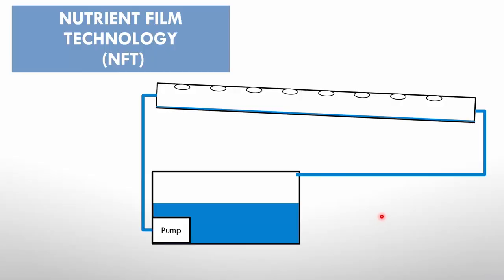So we will discuss the different systems first and then we'll do a combined calculation. Now this is an NFT system, a nutrient film technology system, where you've got a thin film of water running at the bottom of this pipe and it's circulated.